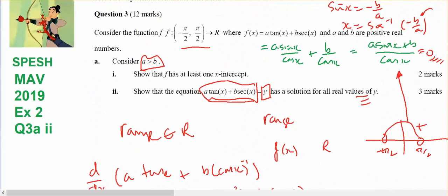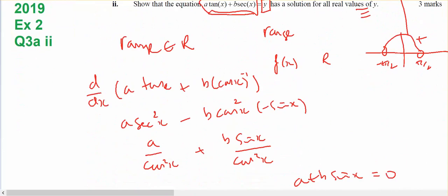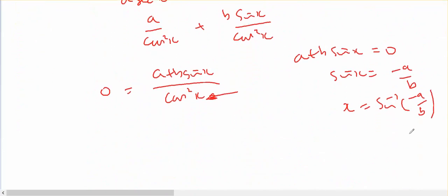But the problem is, a is bigger than b. Therefore, that will be less than negative one. Therefore, there is no solution.